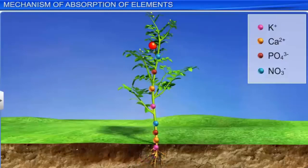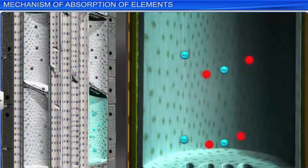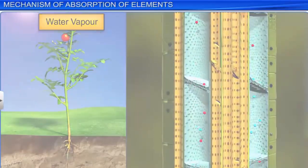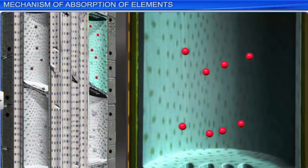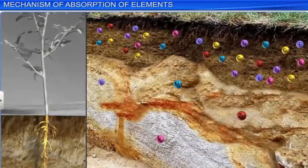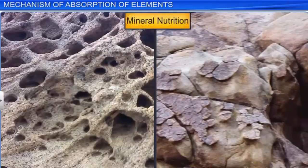The movement of ions from the root cells to other parts of the plant happens through the xylem tissue. The xylem carries the ions along with water. This is called translocation, and translocation is aided by transpiration. An analysis of water in the xylem shows the presence of mineral salts. Soil provides stability to a plant along with air and water. It is a reservoir of all the major nutrients needed for the plant. Soil is formed by the weathering of rocks, which provides the soil with minerals. This is termed as mineral nutrition.